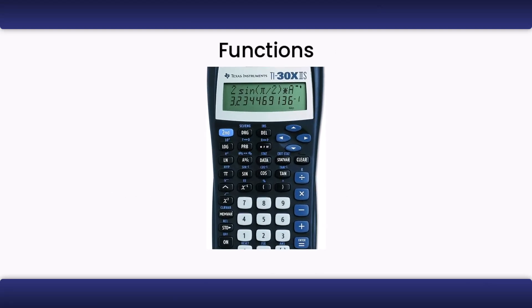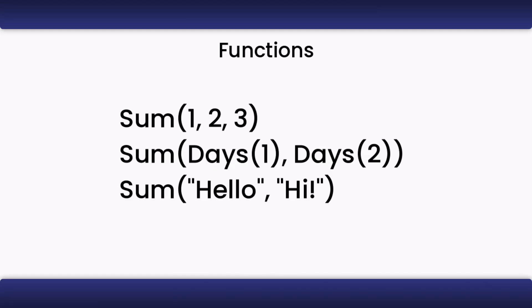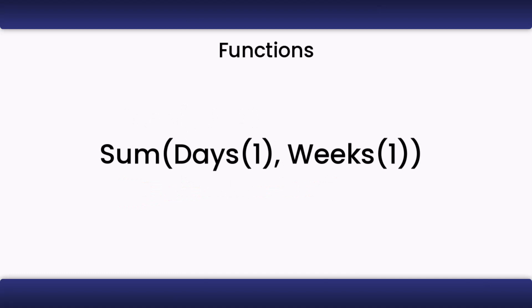Functions are predefined ways to transform data. You can think of them like the functions on a calculator. An example is the sum function. You can plug data into the sum function, and it will try to sum the data together. However, the sum function can only be used on number types and duration types. So if you want to sum two things together, they must both be the correct types.